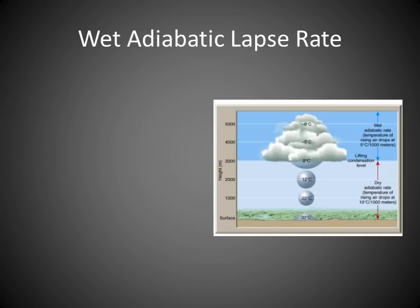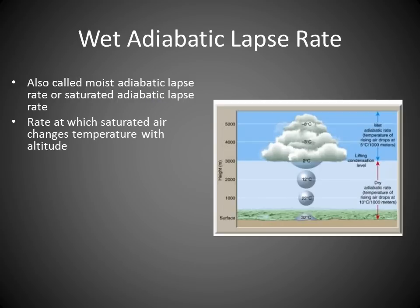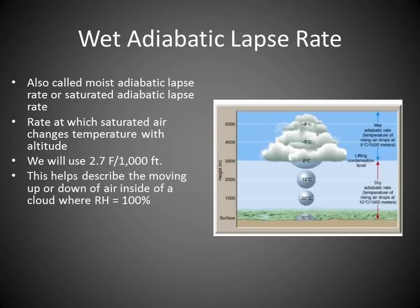The next type is the wet adiabatic lapse rate, also called the moist adiabatic lapse rate or saturated adiabatic lapse rate. This applies to the presence of clouds and describes the rate at which saturated air moves through the atmosphere. We'll use a value of 2.7 degrees Fahrenheit per thousand feet.